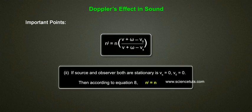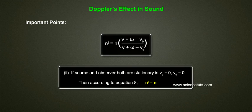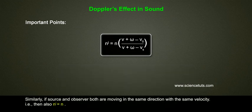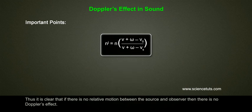Important point 2: If source and observer are both stationary, i.e. vs = 0 and v₀ = 0, then according to Equation 8, n' = n. Similarly, if source and observer are both moving in the same direction with the same velocity, i.e. vs = v₀, then also n' = n. Thus it is clear that if there is no relative motion between the source and observer, there is no Doppler effect.